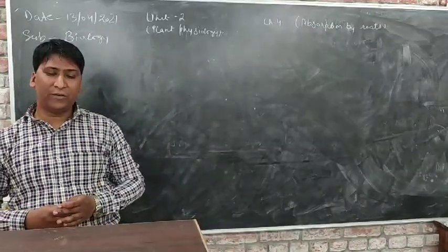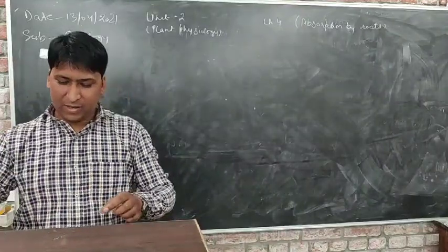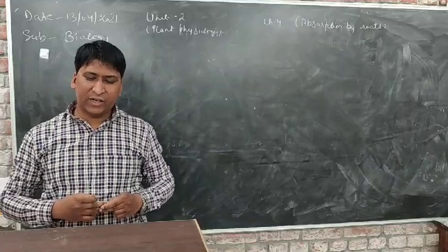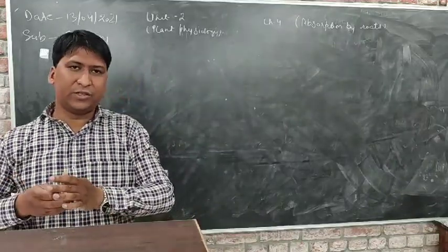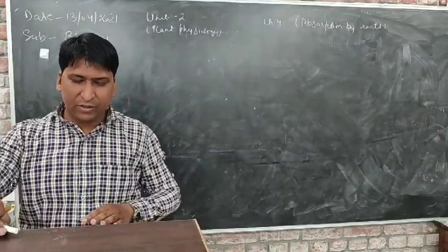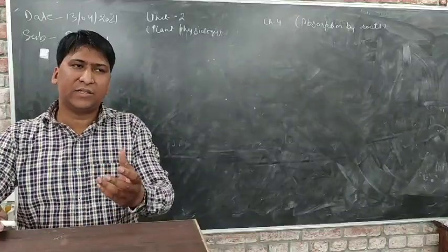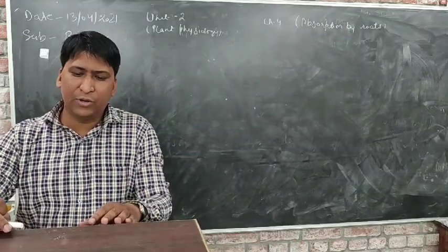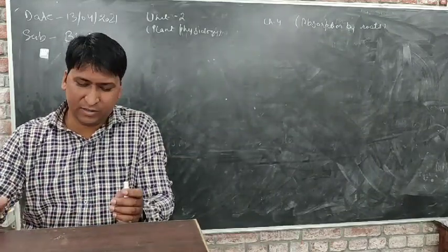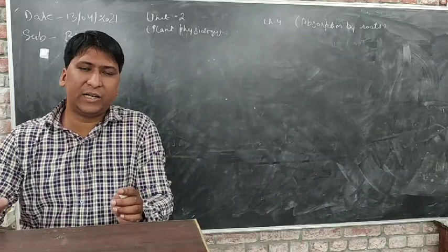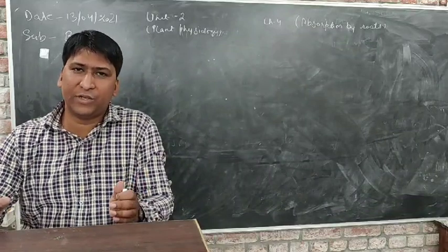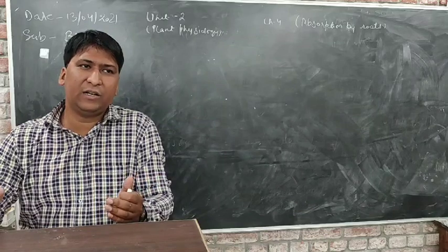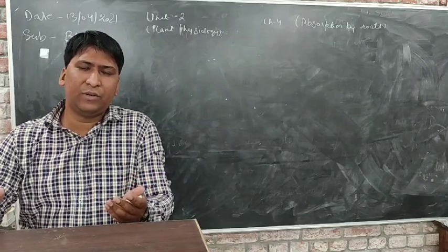Good morning students. Today we are going to start a new chapter — chapter number four: absorption by root. We are starting a new unit, plant physiology, in which we will discuss the functions of plants and how each individual part like cells and tissues work together to perform specific tasks. I am not taking the chapter on genetics right now because last time it was covered in the whole examination, so maybe this time also that chapter can get selected. If not, we can do it later.